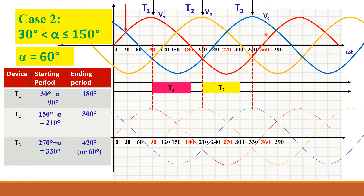There are periods where no devices are conducting — between 180° and 210°, 300° and 330°, and so on. During these intervals, none of the thyristors are conducting, which means the output voltage waveform is going to be discontinuous.